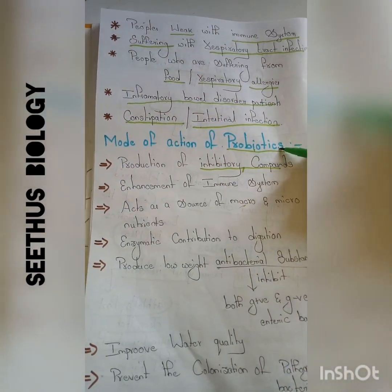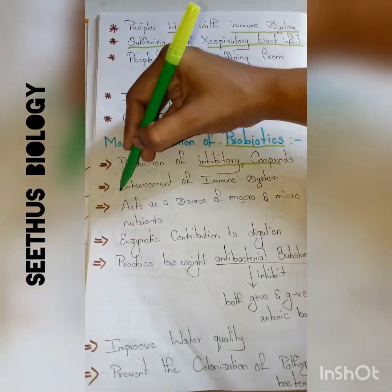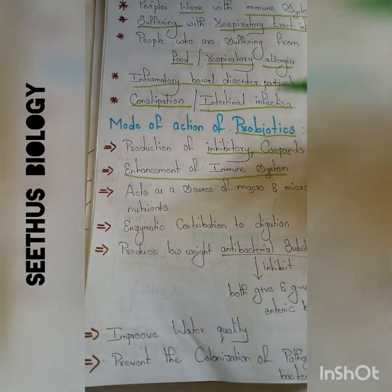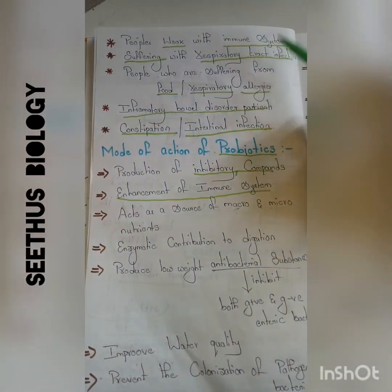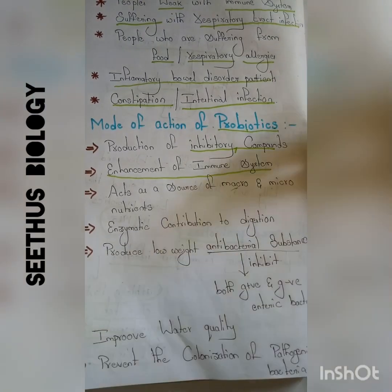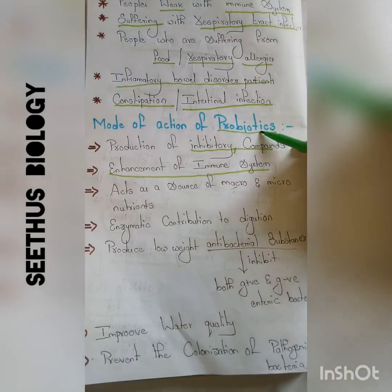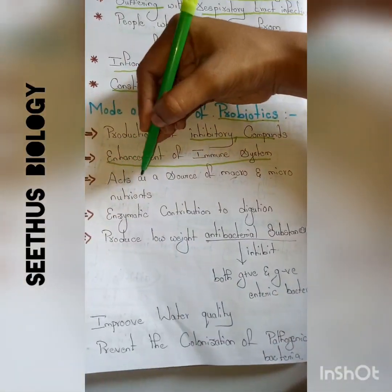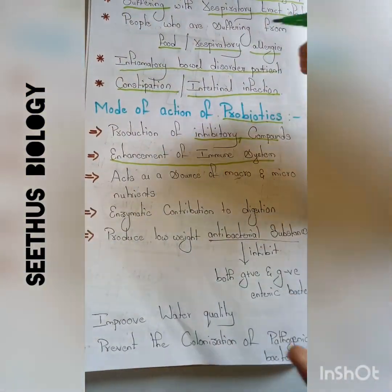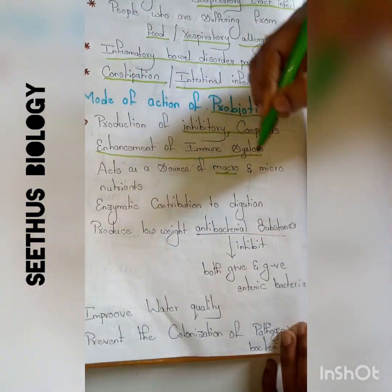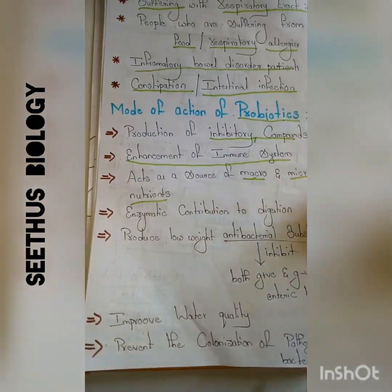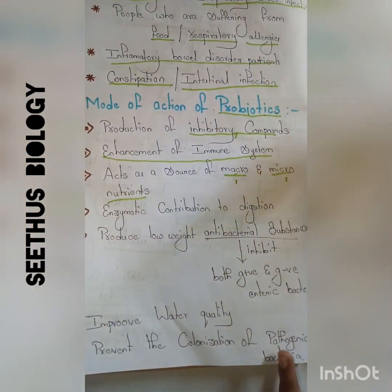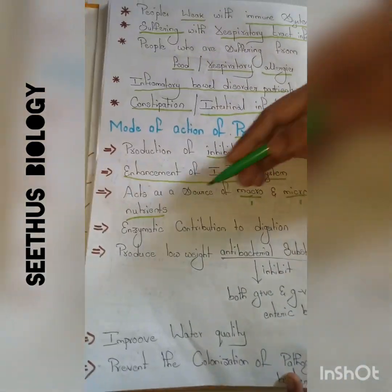That is the main role played by probiotics. Next, coming to the enhancement of the immune system: probiotics are also used by people who have a weak immune system. When those people take probiotics, their immune system will be enhanced. Additionally, these probiotics act as a source of macro and micronutrients — macro meaning large, micro meaning small — playing a major role in nutrition.